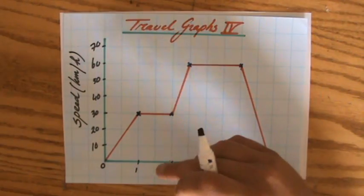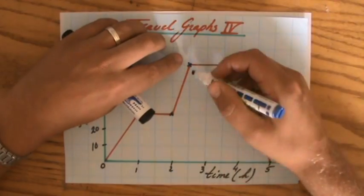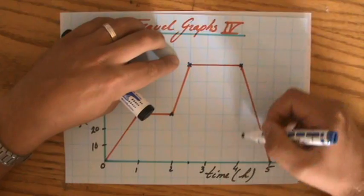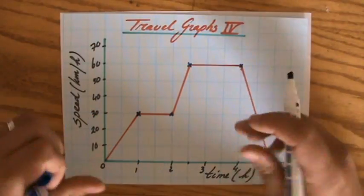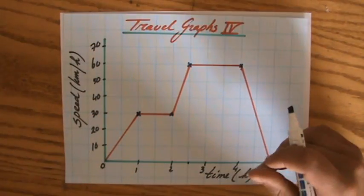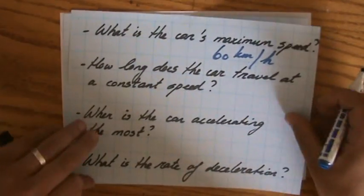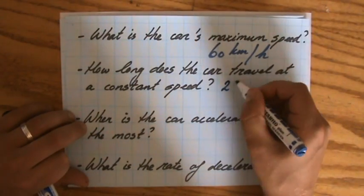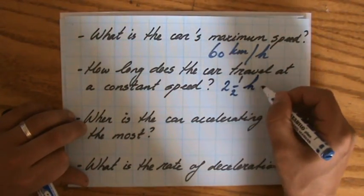So it is one hour here, and from two and a half up to four, so it is one and a half hours there. So in total, one and one and a half, for two and a half hours the car is traveling at constant speed.